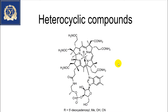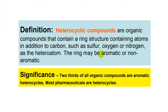Today we are studying heterocyclic compounds. Heterocyclic compounds are organic compounds containing a ring structure with atoms in addition to carbon, such as sulfur, oxygen, or nitrogen as their heteroatom. The ring may be aromatic or non-aromatic. Significance: two-thirds of all organic compounds are aromatic heterocyclics.